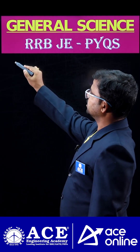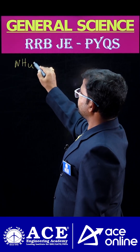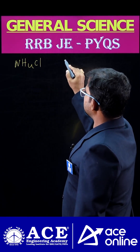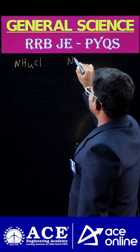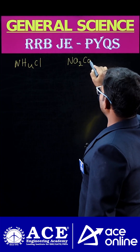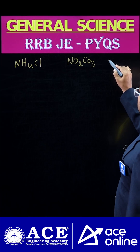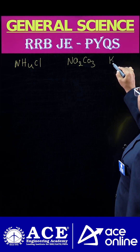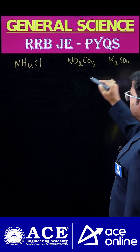Here we have some shortcuts. NH4Cl — ammonium chloride. Next, Na2CO3 — sodium carbonate. Next, K2SO4 — potassium sulfate.